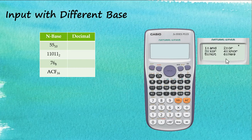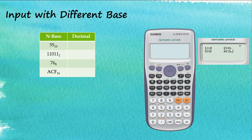After we click Shift Base, we can see a few options. The first screen shows logic operations, which is not what we want. There's a small triangle indicating another screen, so tap the down arrow. Then we see four options: D for decimal, H for hexadecimal, B for binary, and O for octal. In our case, we want to tell the calculator this number is decimal, so we choose 1.